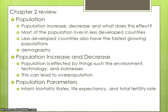Population parameters include infant mortality rate, which is the percent of children who pass away before their first birthday; life expectancy, which is the average length of someone's life in a country; and total fertility rate, which is the average number of children born to a woman in her childbearing years. In poorer countries, life expectancy is low and total fertility rate and infant mortality rates are usually high.